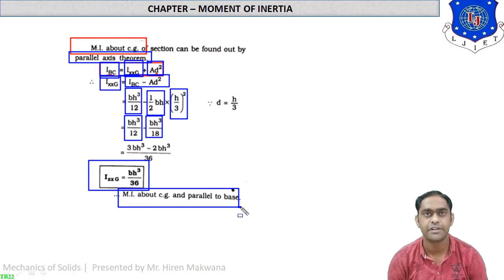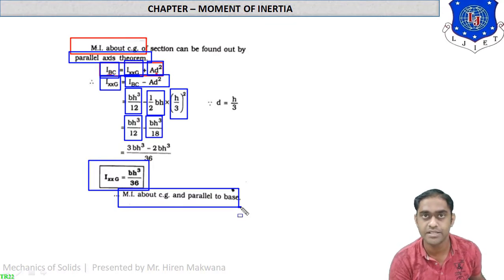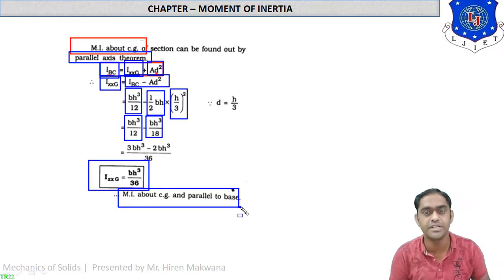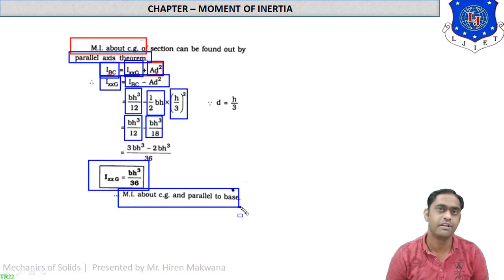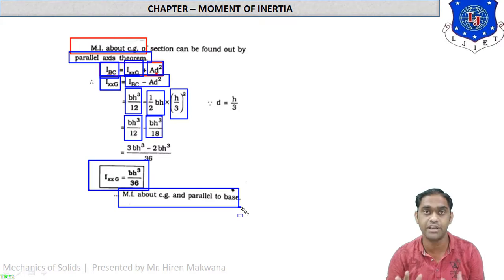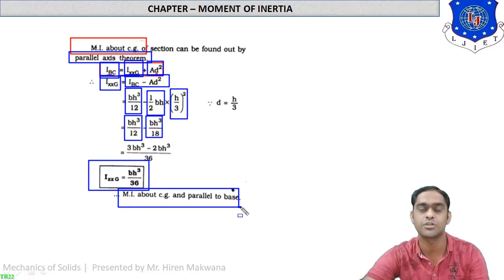So we have derived four formulas: for the rectangle, moment of inertia about the centroidal axis is bd³/12 and about the base is bd³/3; for the triangle, moment of inertia about the base is bh³/12 and about the centroidal axis is bh³/36. Generally we use the centroidal axis formula when calculating numericals. These two derivations are very important from the exam point of view. In the next lecture we will start other theories and numericals. Goodbye students, thank you very much — practice well.